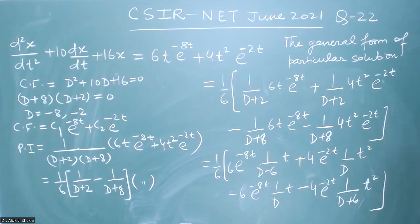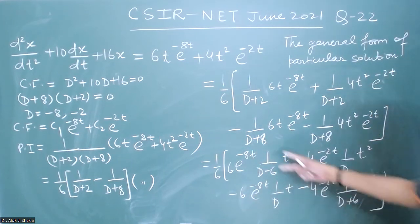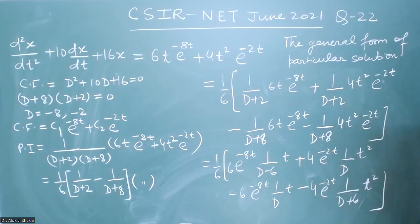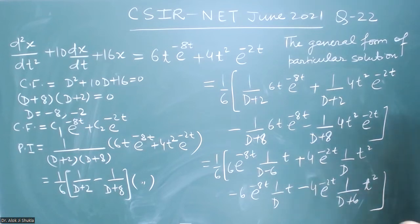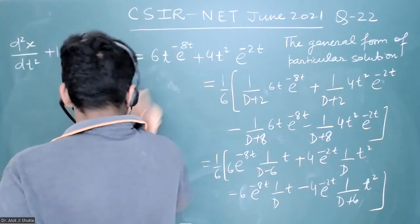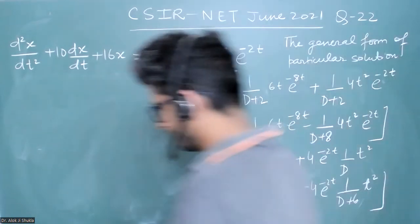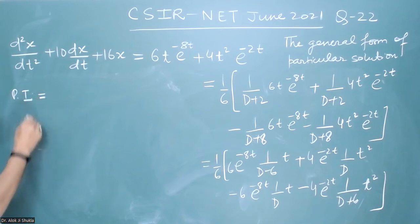This is now easy to solve. You will take −6 common and make it 1/(1 − D/6), take it to the numerator and open it as a binomial. And for the 1/D terms, that is just integration. For the 1/(D+6) term, take 6 common so it becomes 1/(1 + D/6). So we have to solve with that much. Let me quickly solve it, and the particular integral will become: